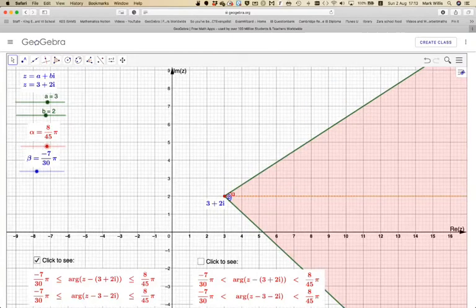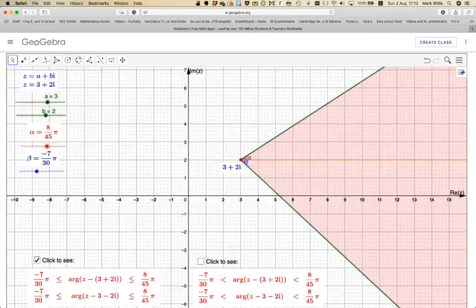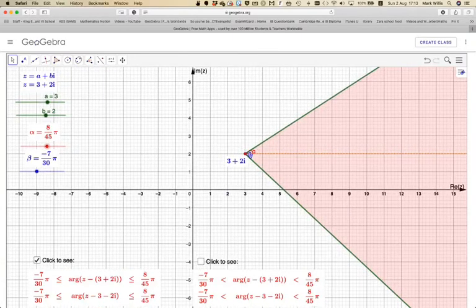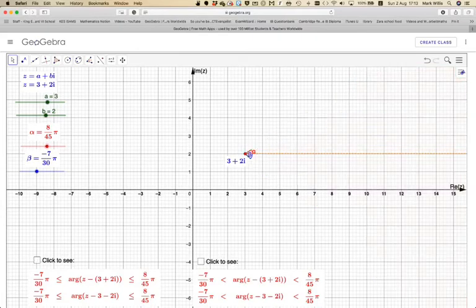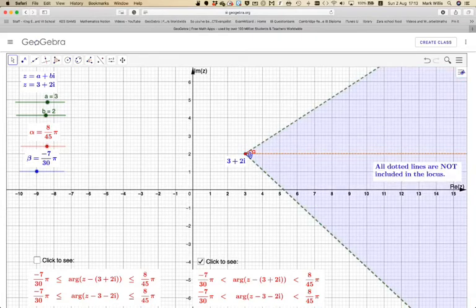If it's not equal to, then it's the same idea but the lines are dotted and none of the dotted lines are included in the locus, including this one here as well, this is not included as well.